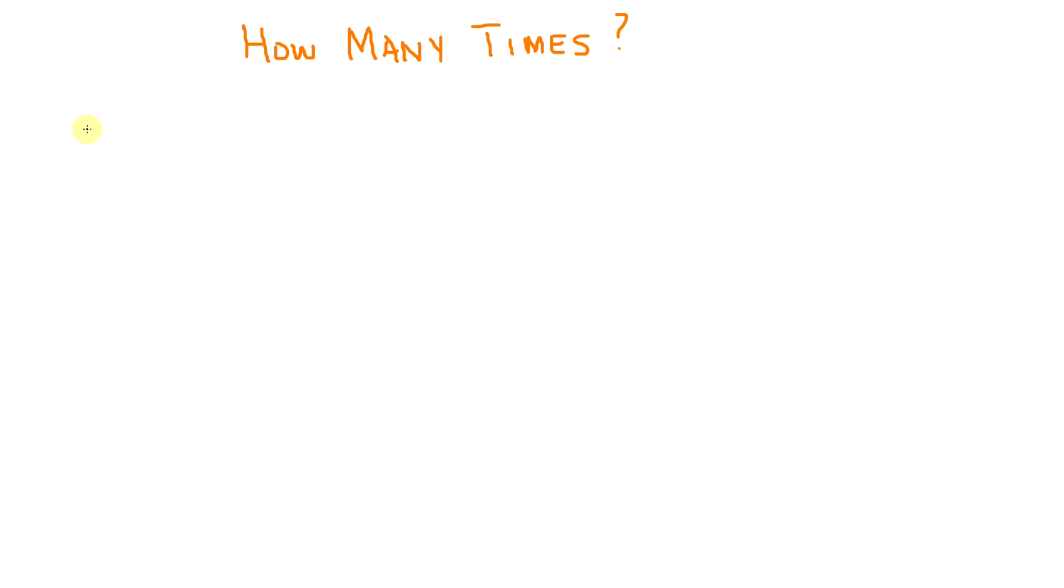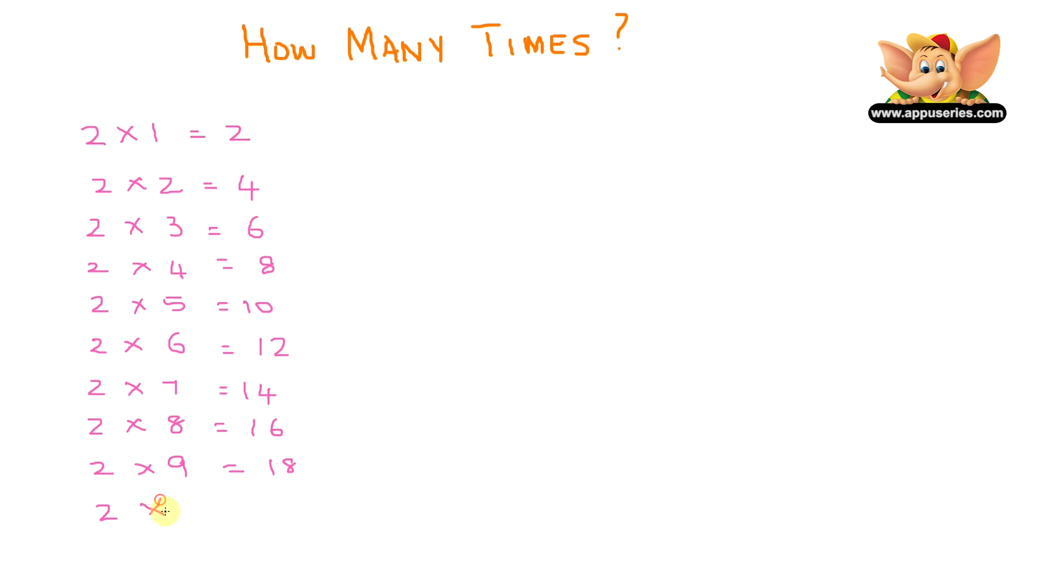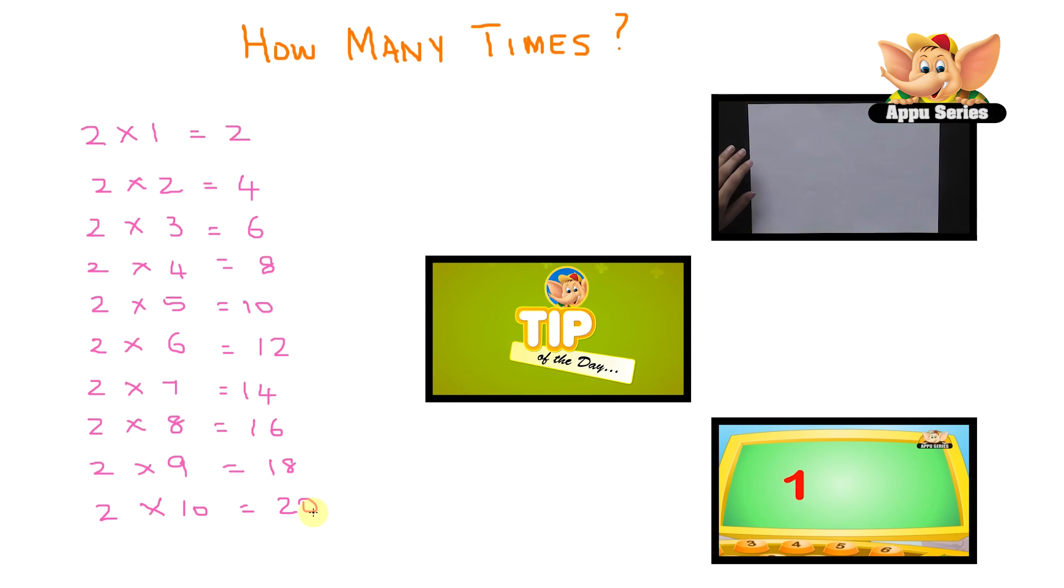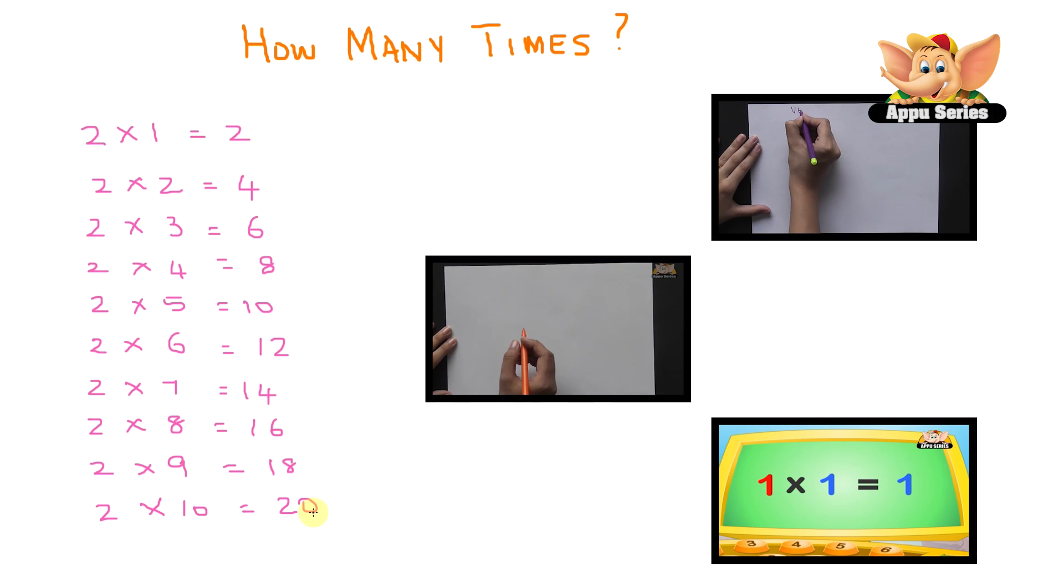So now we'll teach you about multiplication tables. The multiplication table of 2 is 2 times 1 equals 2, 2 times 2 equals 4, 2 times 3 equals 6, 2 times 4 equals 8, 2 times 5 equals 10, 2 times 6 equals 12, 2 times 7 equals 14, 2 times 8 equals 16, 2 times 9 equals 18, 2 times 10 equals 20. We have many other videos that teach you about multiplication tables and that also shows you multiplication tricks. Click on the link to watch them.